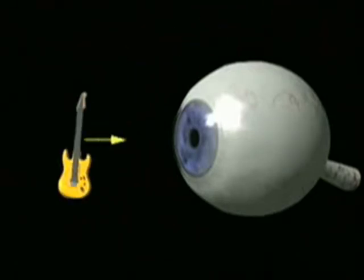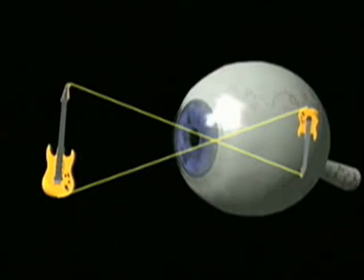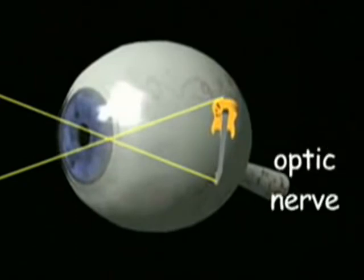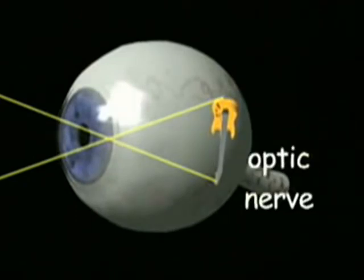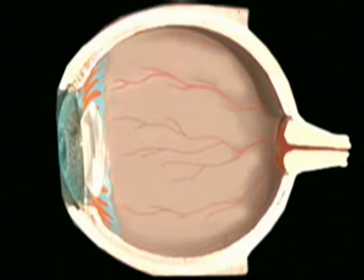Light enters the cornea and then is bent towards the retina, where an inverted image strikes the rods and cones. The rods and cones send electrical impulses to the brain through nerve fibers that collect to form the optic nerve behind the eye. The place where the fibers come together has no rods or cones, so images can't be seen at this point.